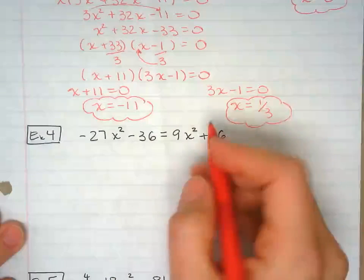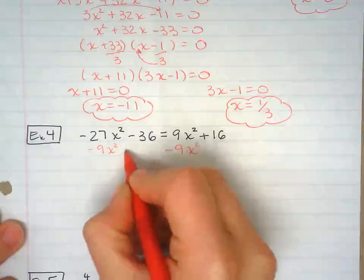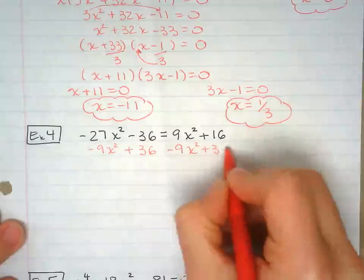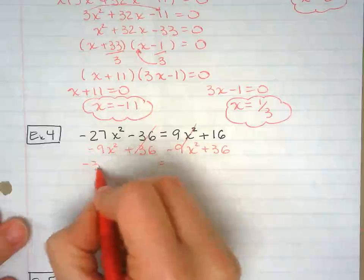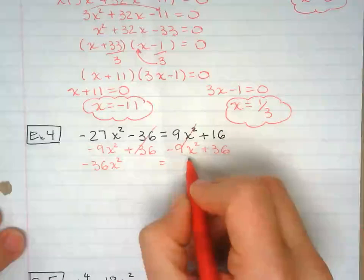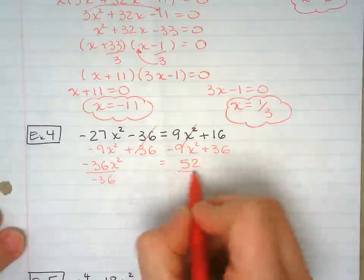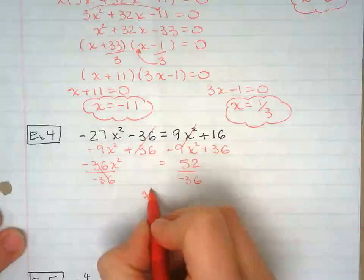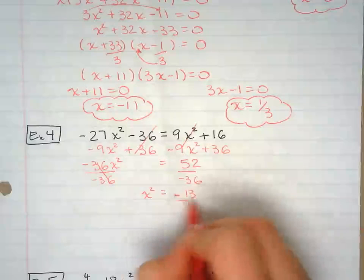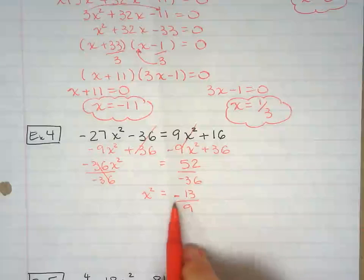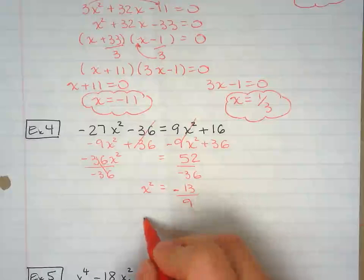This one, I'm going to start out by taking away 9x squared from both sides, and adding 36 to both sides. This is 0. Here I have negative 36x squared. Here I have x squared is, I'm going to have to leave it as a fraction, negative 13 over 9.